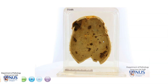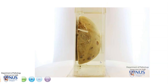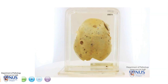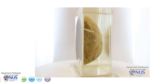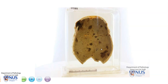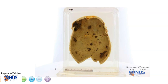Hello. This is a gross specimen showing the calvarium of the skull. We're looking at the inferior surface, and of course, this is the superior surface. We can appreciate that there are several very well-demarcated brownish lesions, some of which occupy the full thickness of the skull, as you can see here. Let's take a closer look.